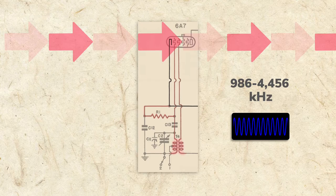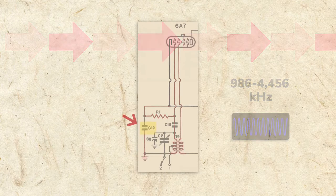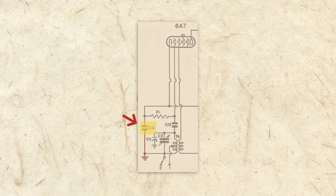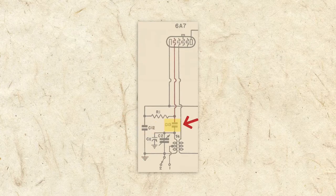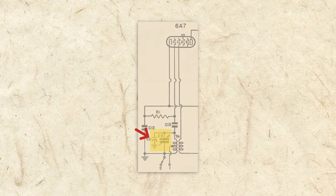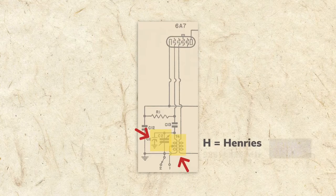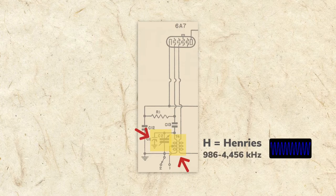Also in the circuit is capacitor C12, used as a bypass, and C13, which keeps direct current off grid 1. C2 and C11 are the oscillator section of our variable condenser. Their capacitance, along with the coil's inductance, rated in Henrys, determine the oscillator frequency.